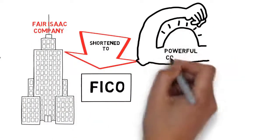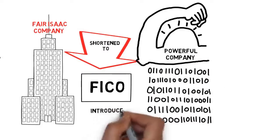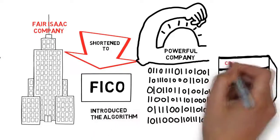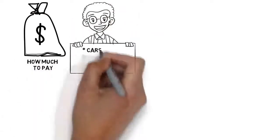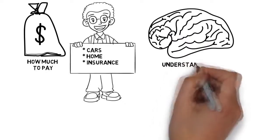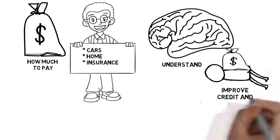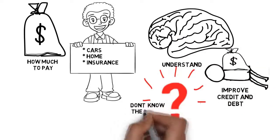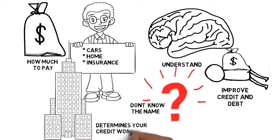It's a hugely powerful company because they introduced the algorithm in 2000 that all the credit bureaus used to determine how much you will pay for cars, your home, insurance, etc. So, how can you understand how to improve your credit and eliminate debt if you don't even know the name of the company that determines your credit worthiness?